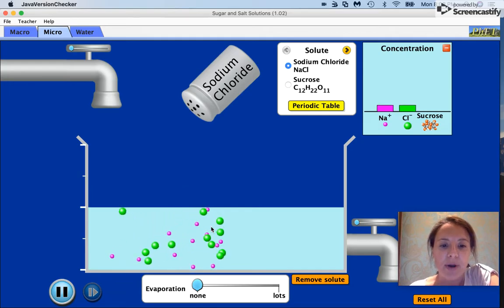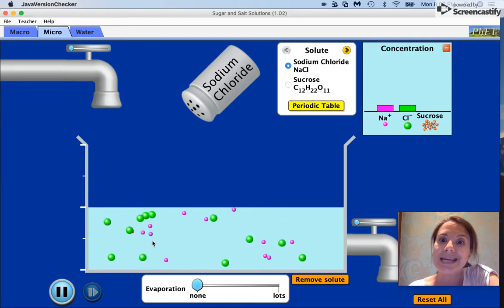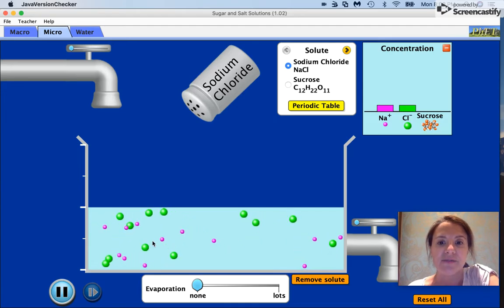We notice that it breaks apart in the water. That crystal lattice no longer is together. We have a whole bunch of mobile ions, the cations and the anions, floating around.